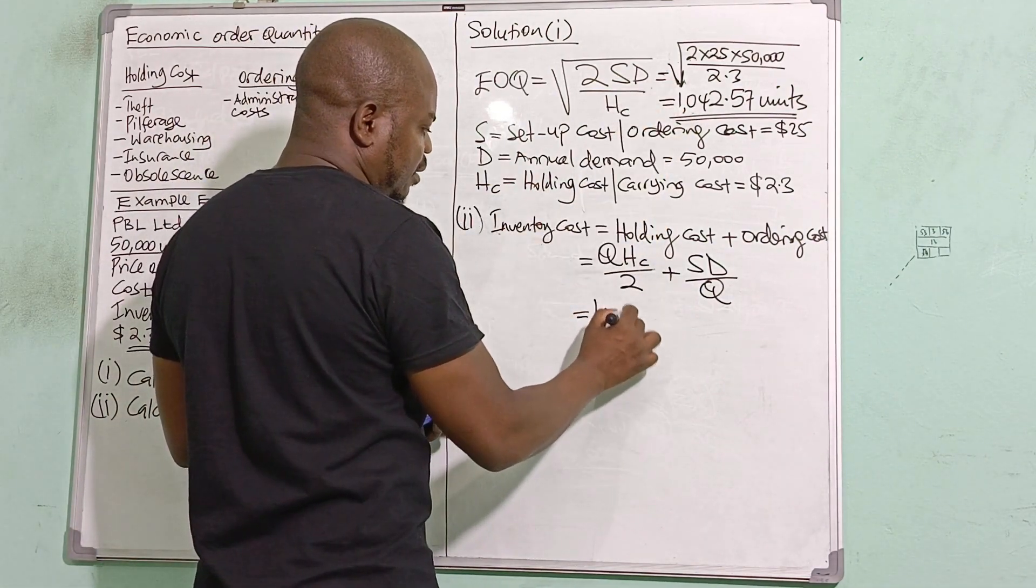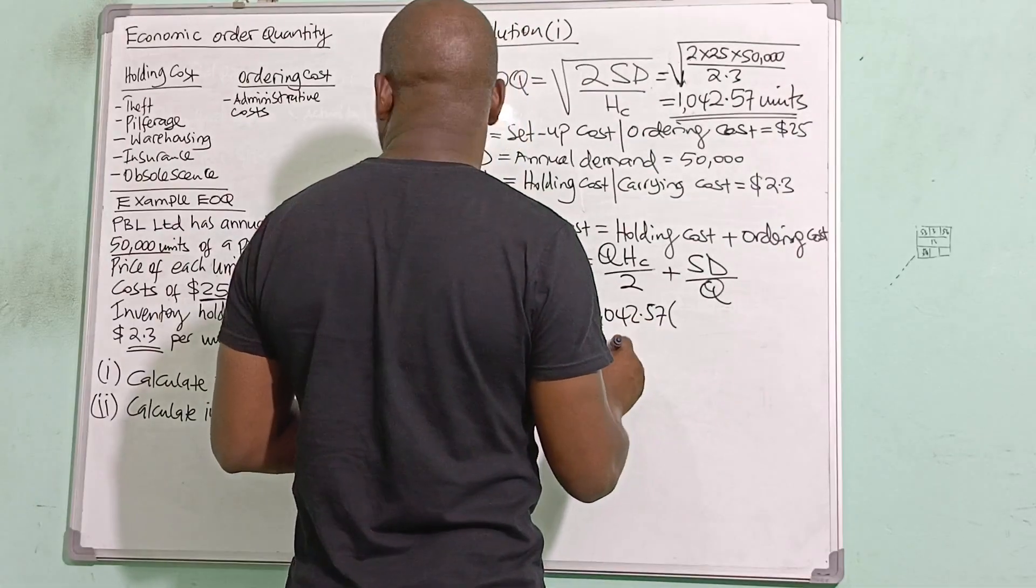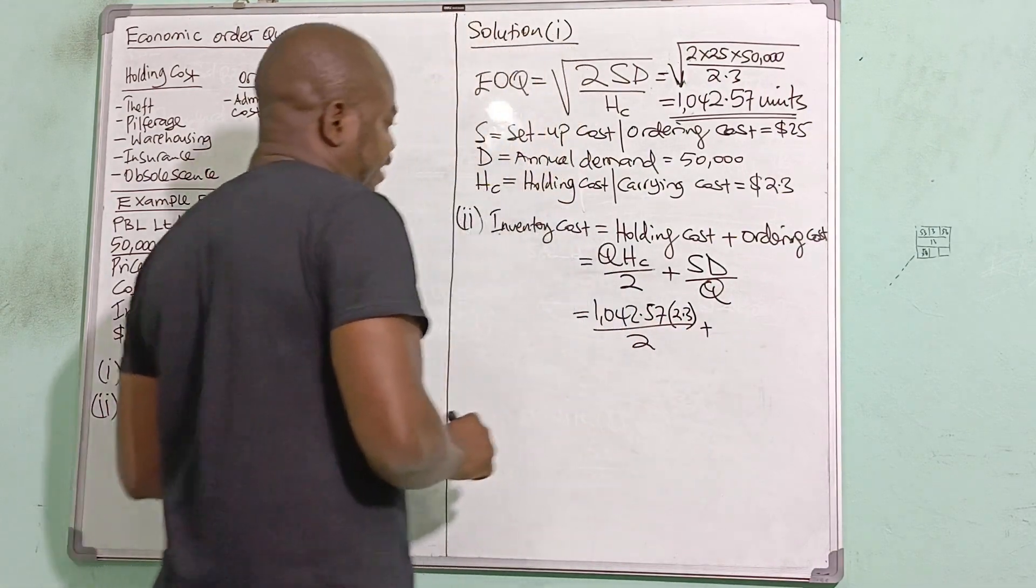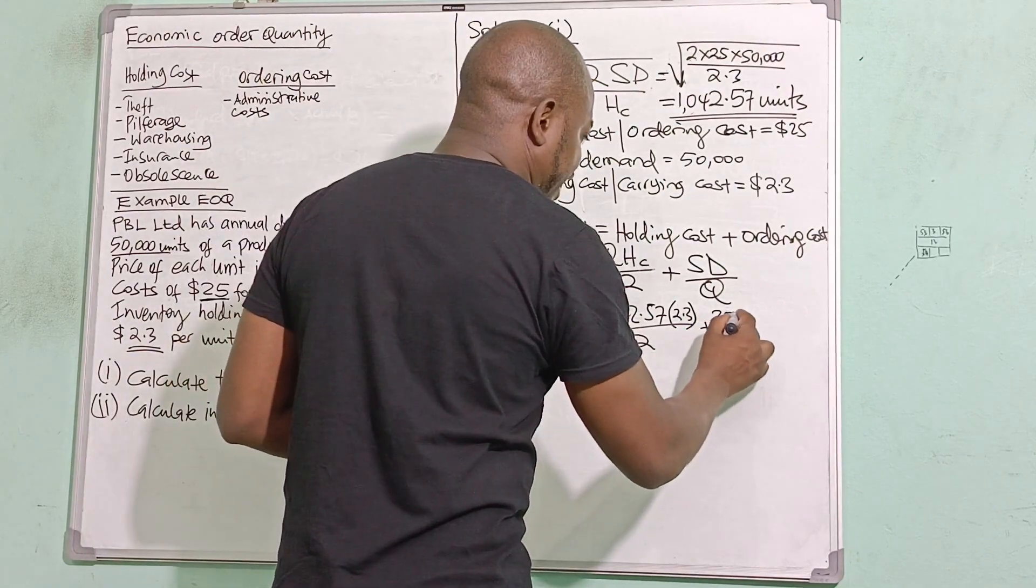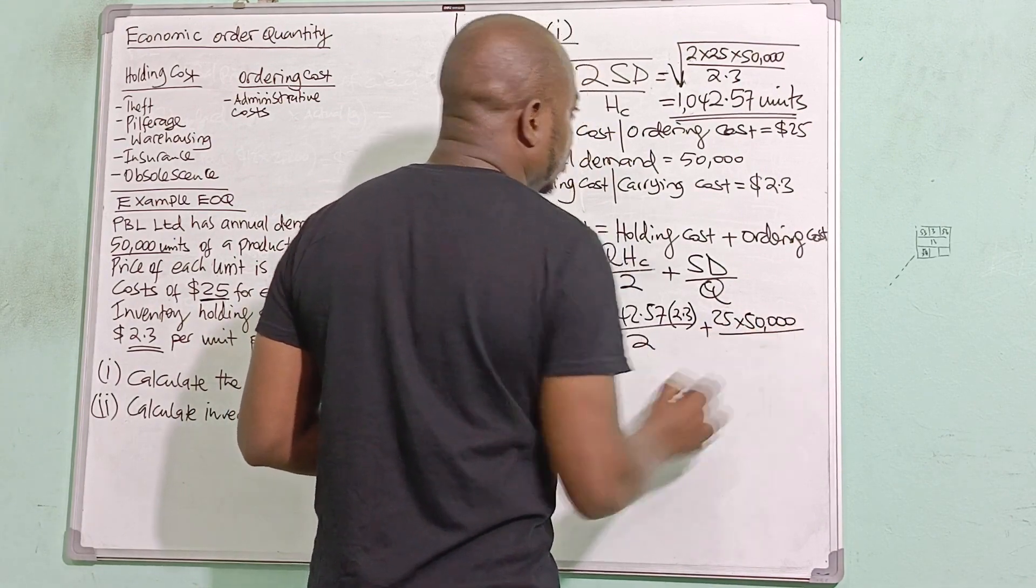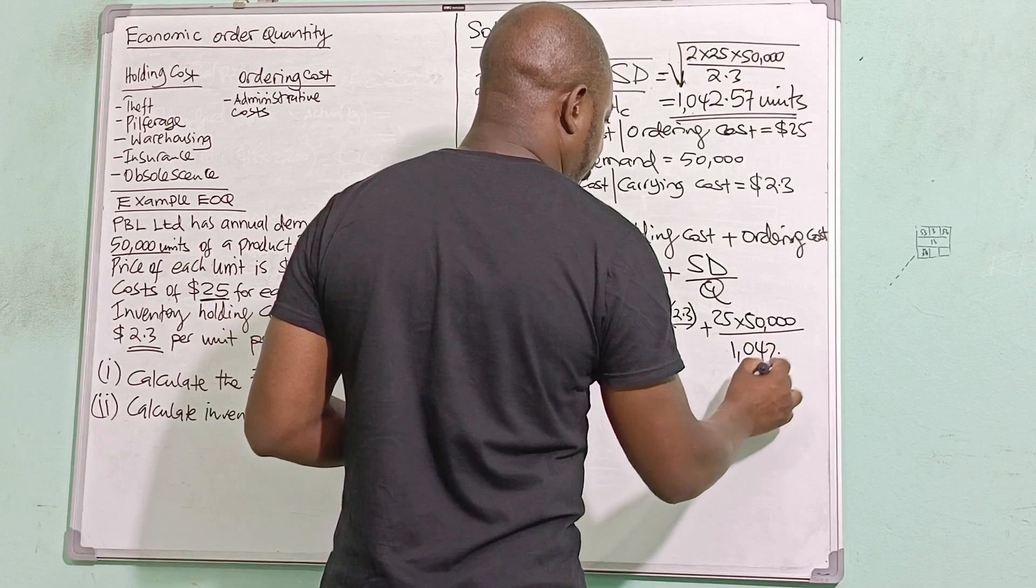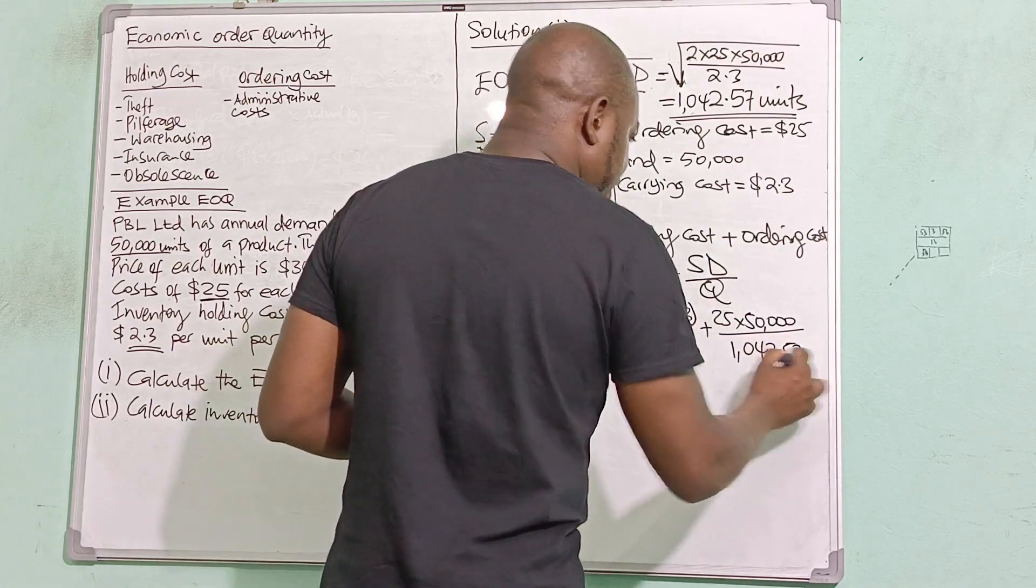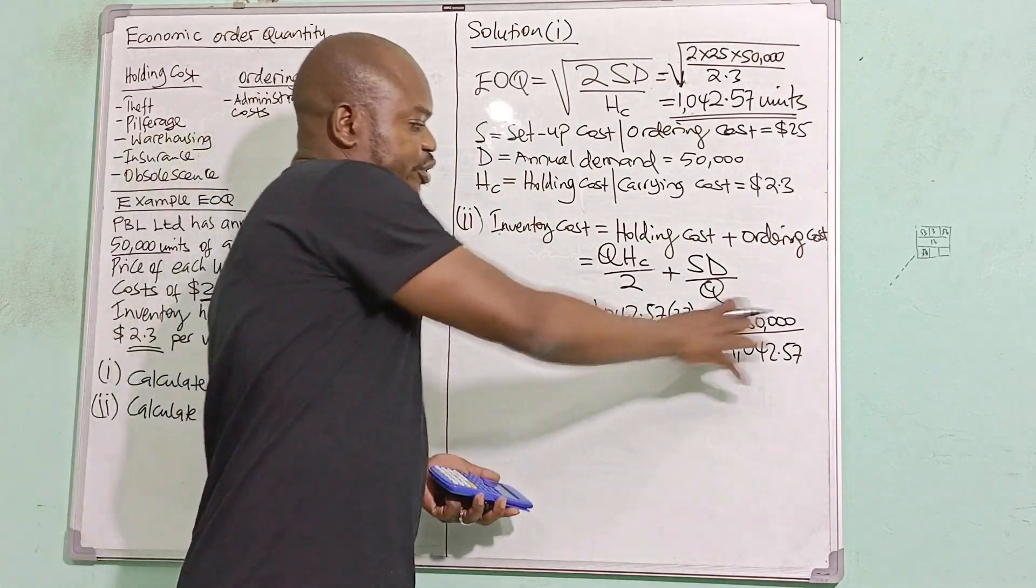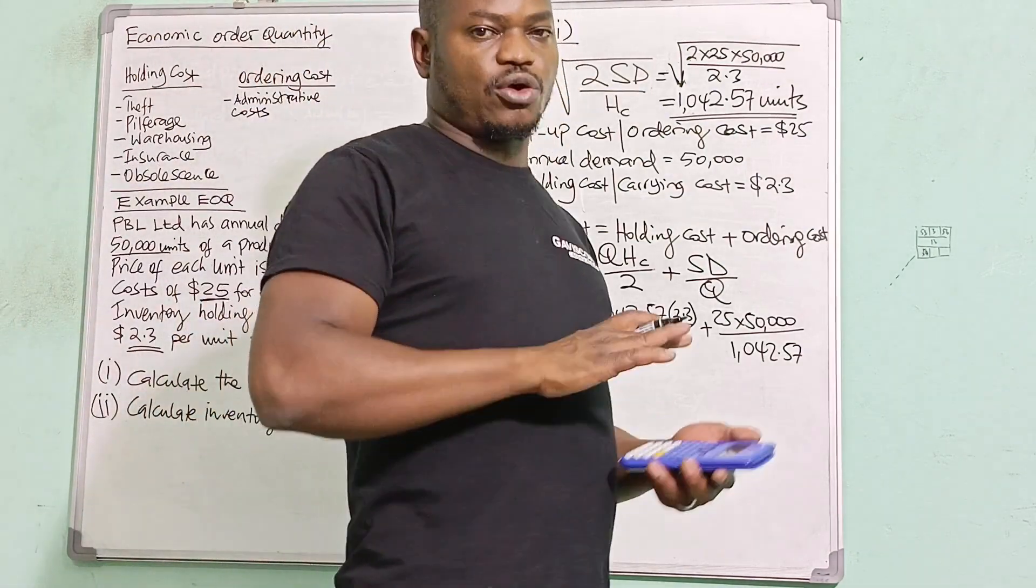Let's use the numbers. I calculated Q, 1,042.57. And then holding cost per unit is 2.3 over 2, plus setup cost or cost of ordering, which is 25 multiplied by 50,000 divided by Q, the EOQ that I calculated. Now, ideally, what it is here is the answer for holding cost should equal the answer for ordering cost, because the assumption is that at EOQ, holding cost equals ordering cost.